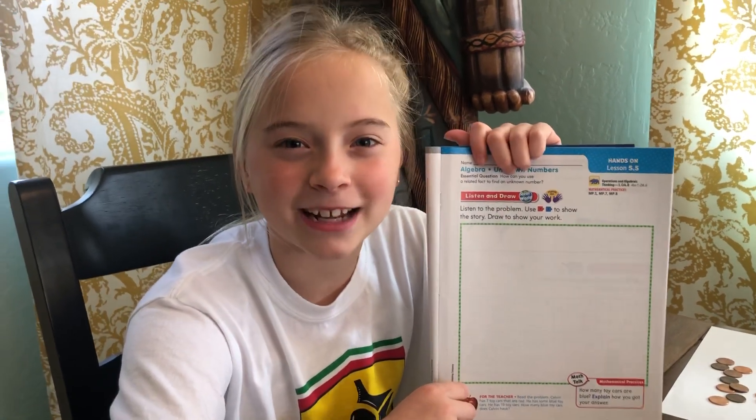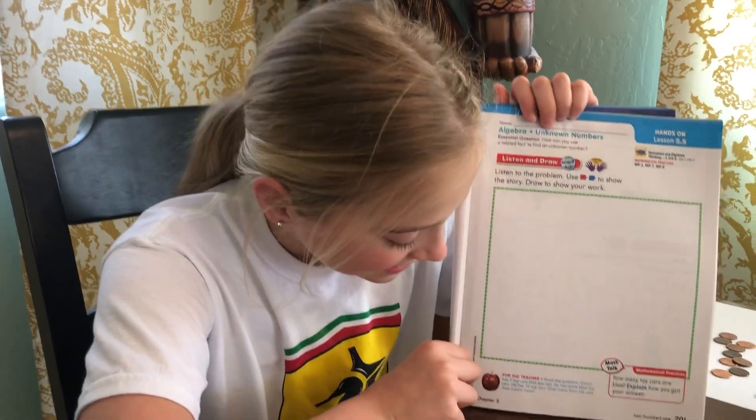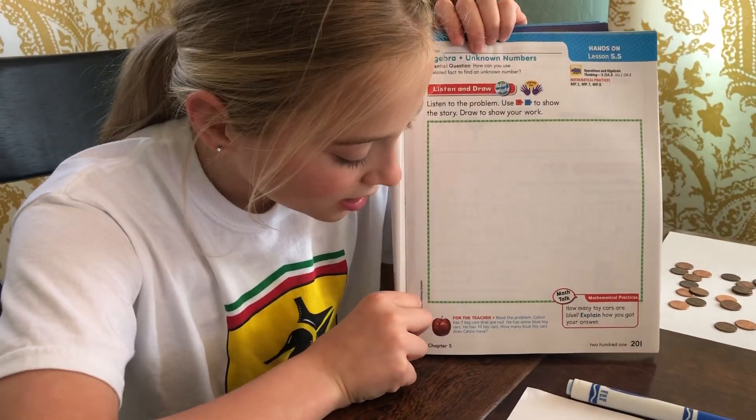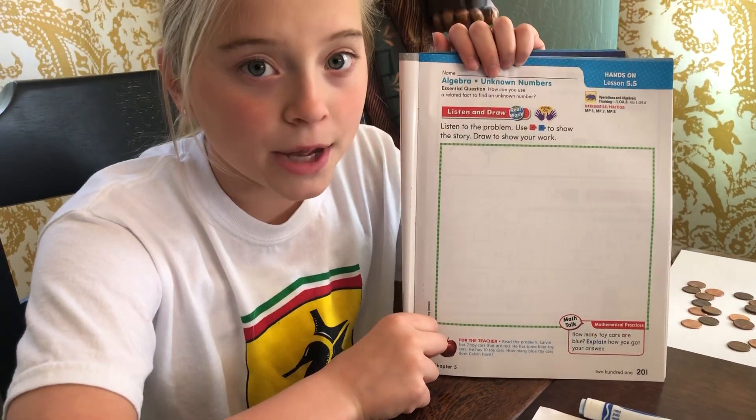Hi boys and girls, it's me Gwen and today we are going to be doing lesson 5.5. It says Calvin has seven toy cars that are red. He also has some blue cars, but in total he has 10 cars.